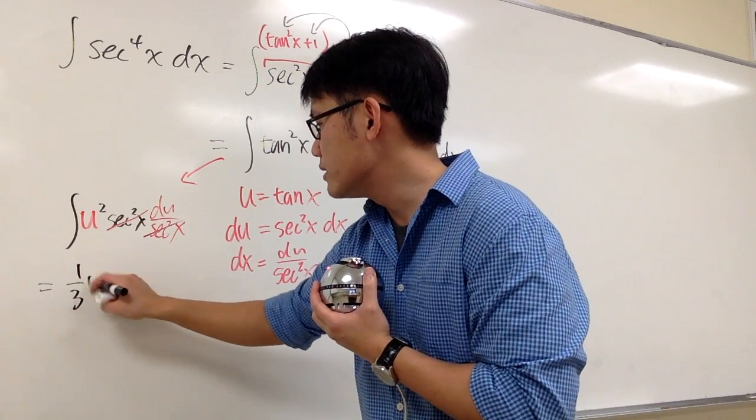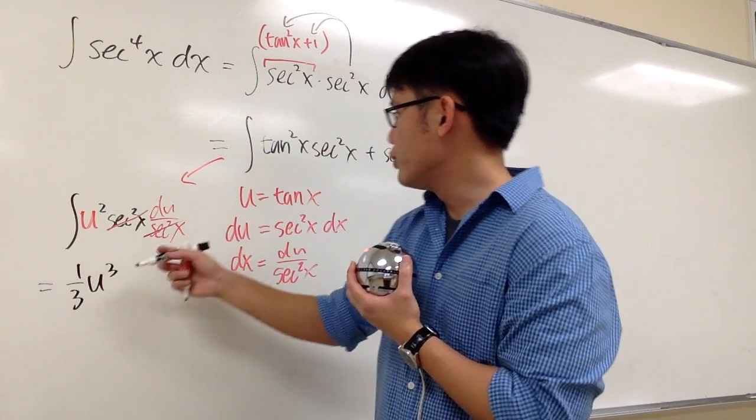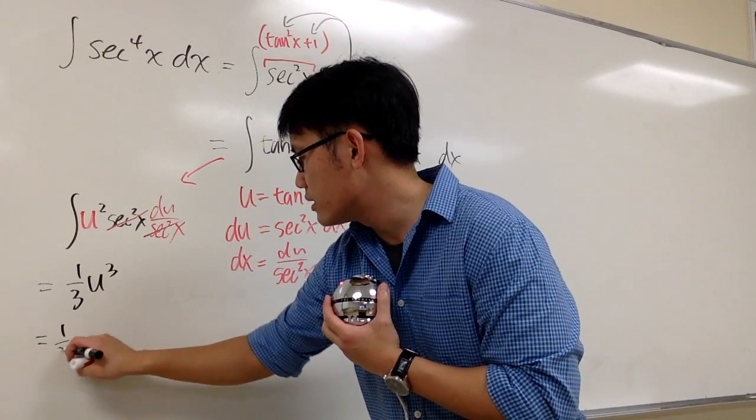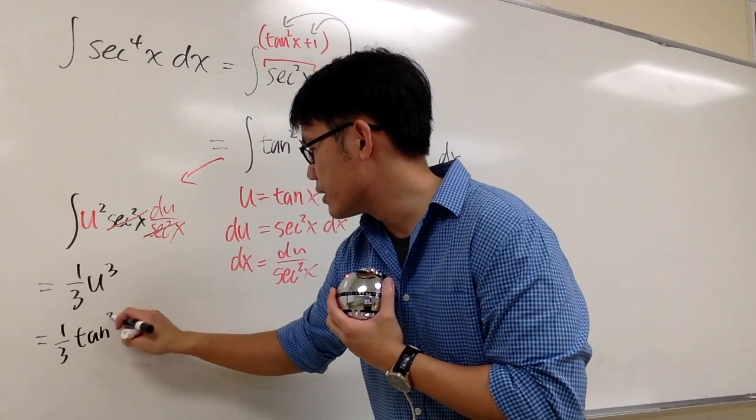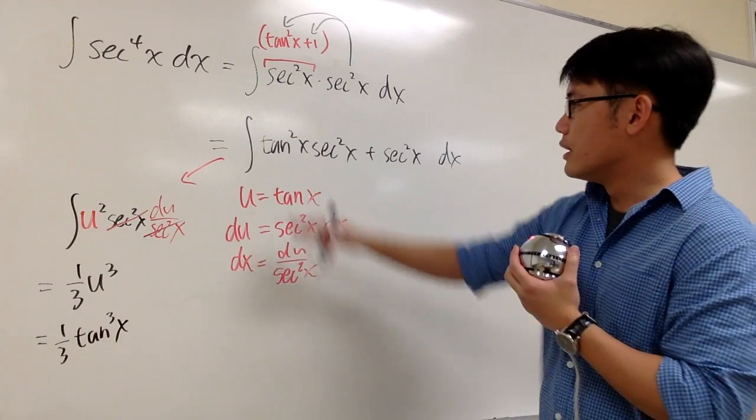which is going to give you 1 third u to the third power, and u is tangent x, so we can see this is 1 third tangent to the third power x. So that's this part.